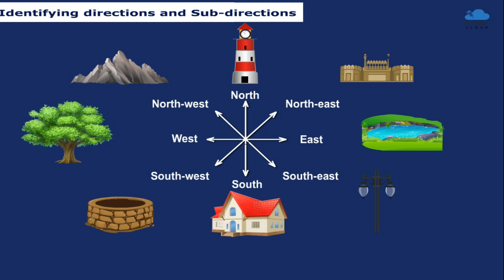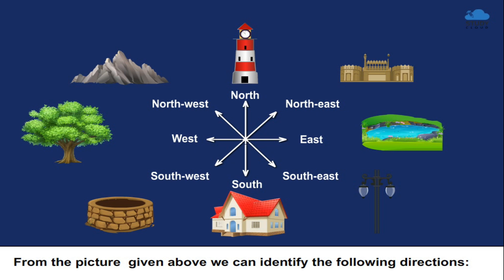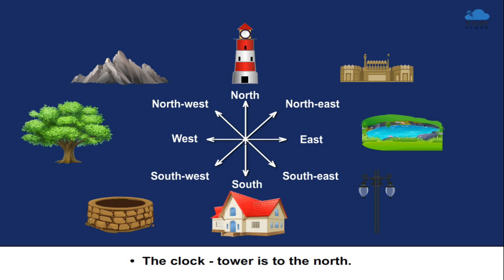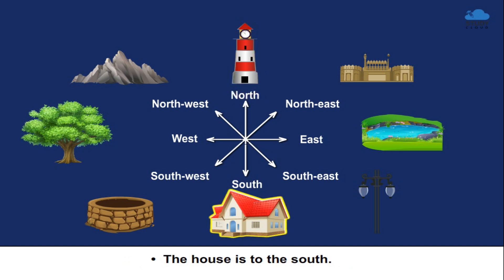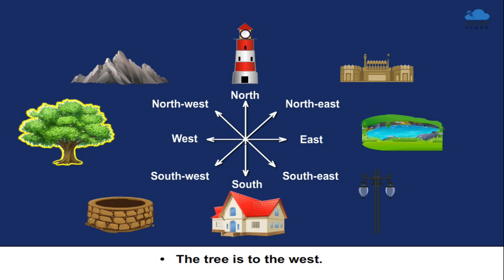Identifying Directions and Sub-Directions. From the picture given above, we can identify the following directions. The clock tower is to the North. The house is to the South. The tree is to the West.